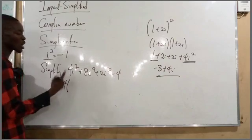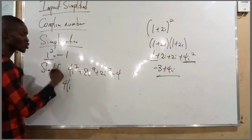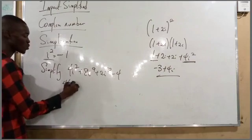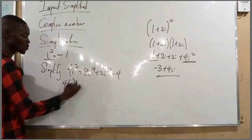How many times does 2 go into 7? It goes 3 times with a remainder of 1.